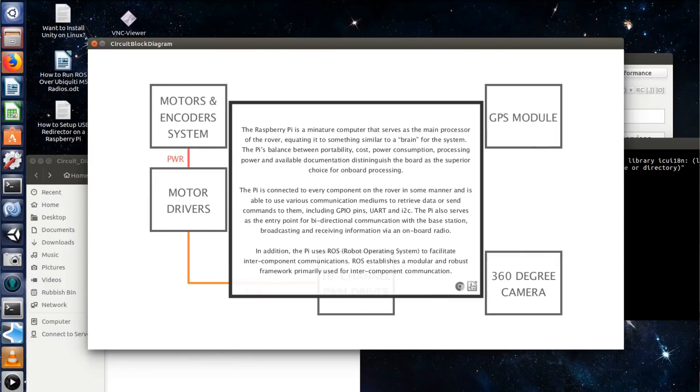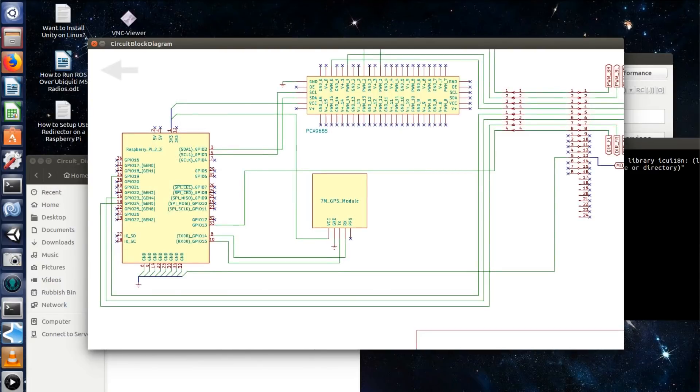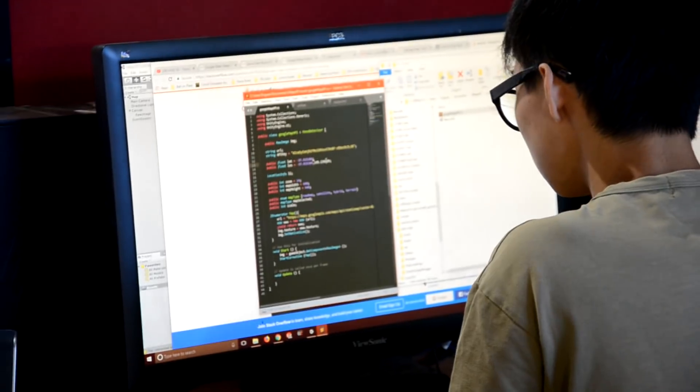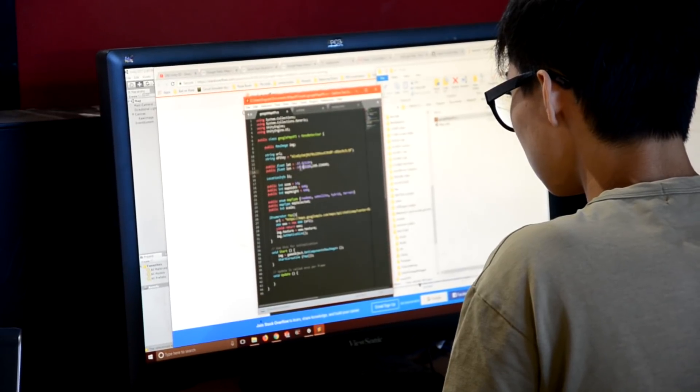We're using the robot operating system for our software suite. What this allows us to do is develop all of our programs and functions independently. Our different sub-teams can work on these by themselves, and then test their programs with various inputs.